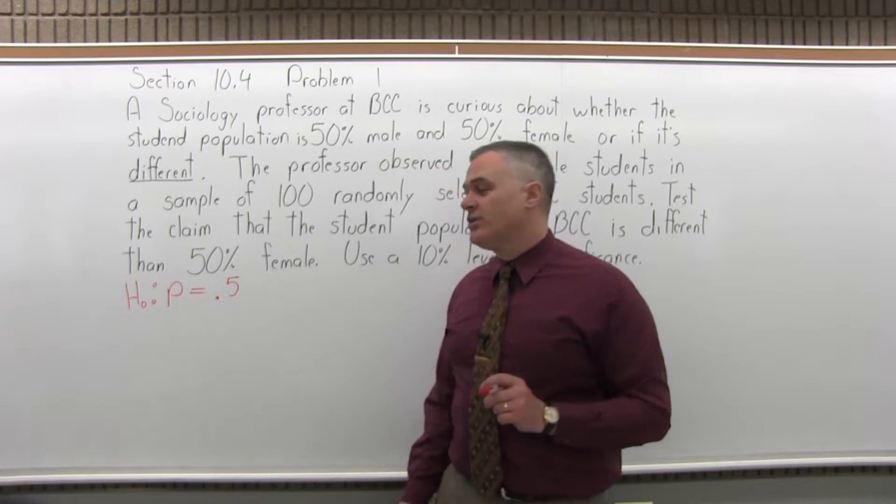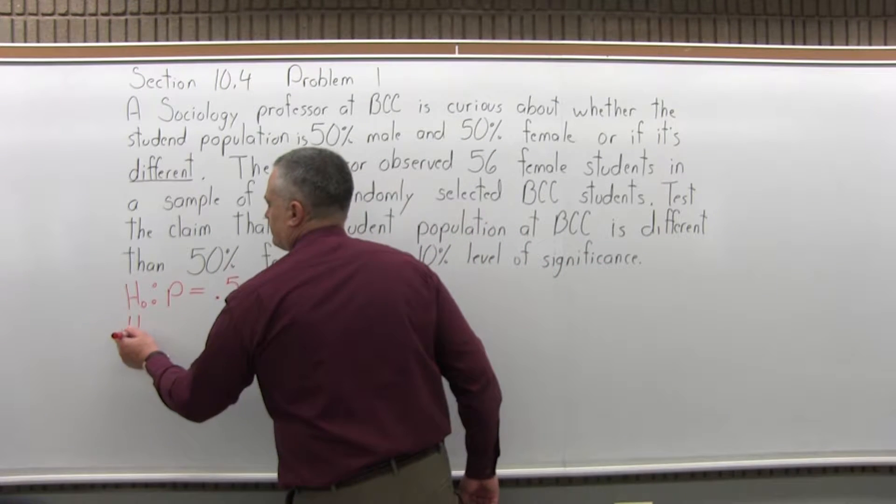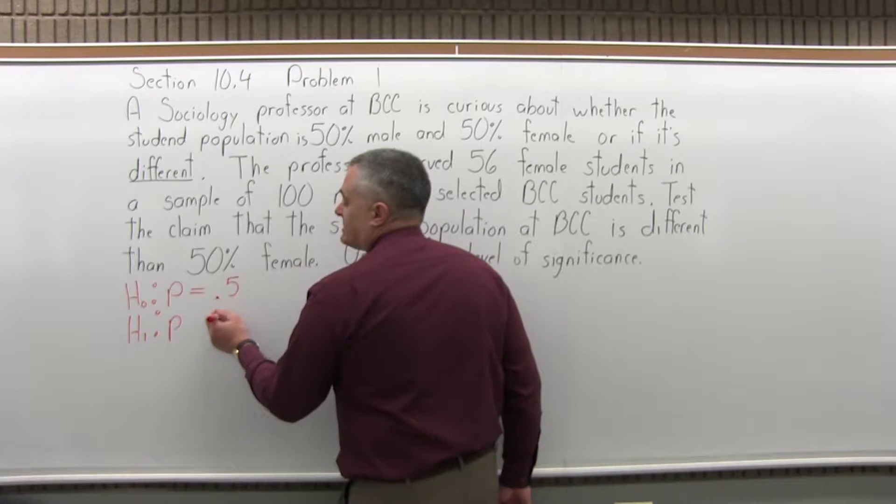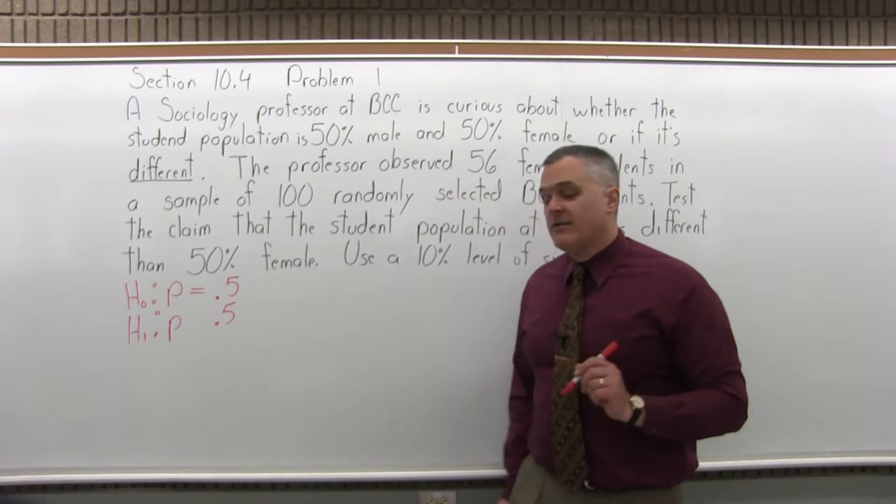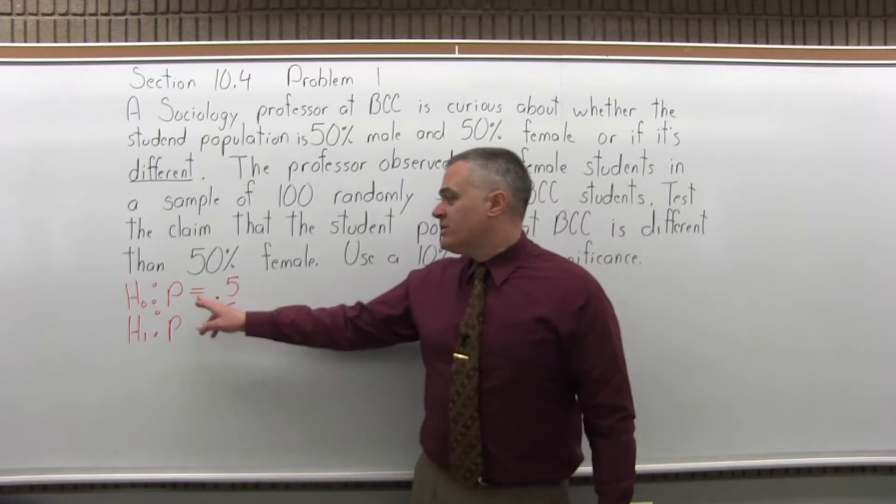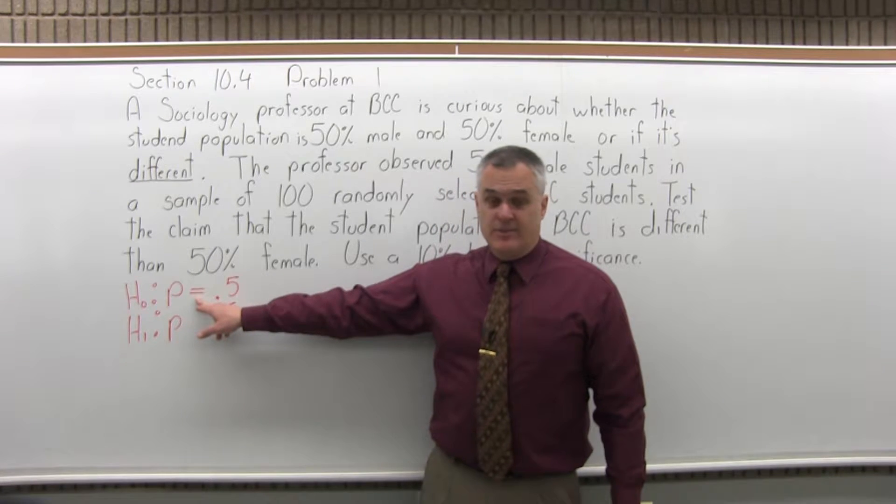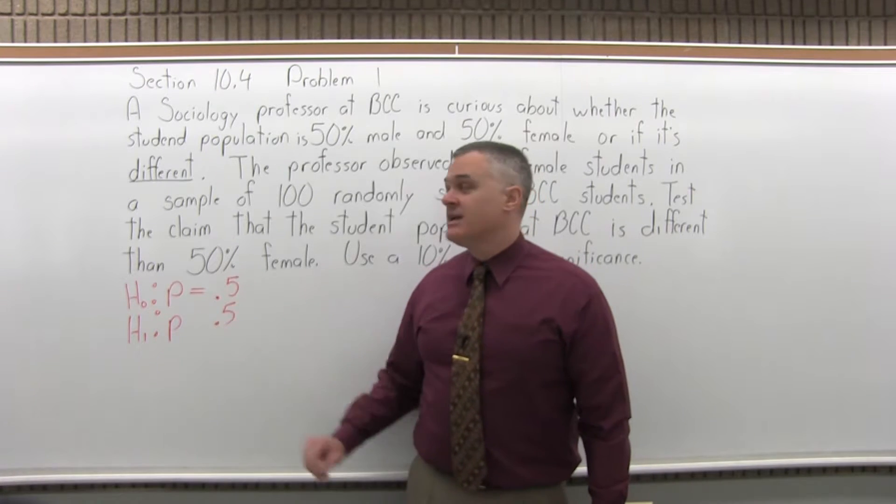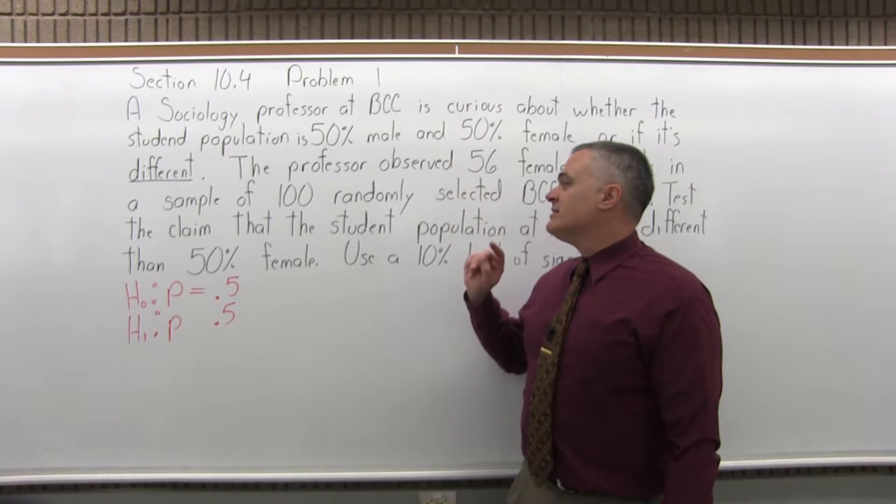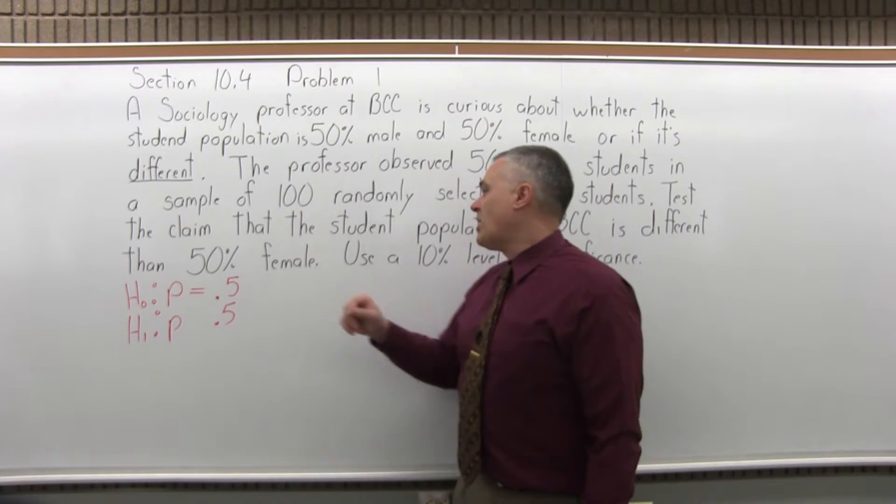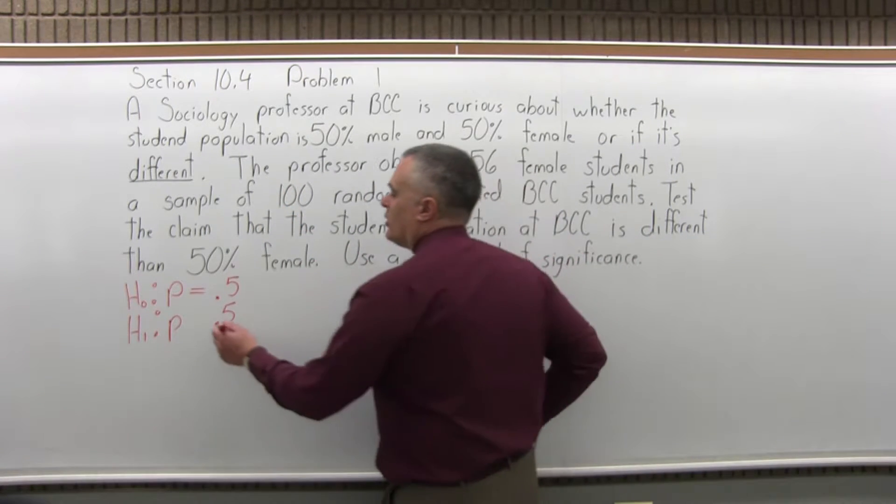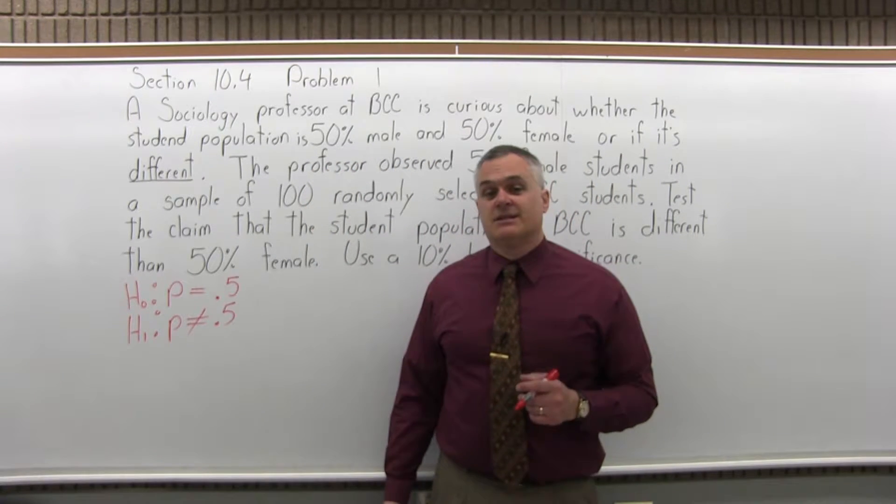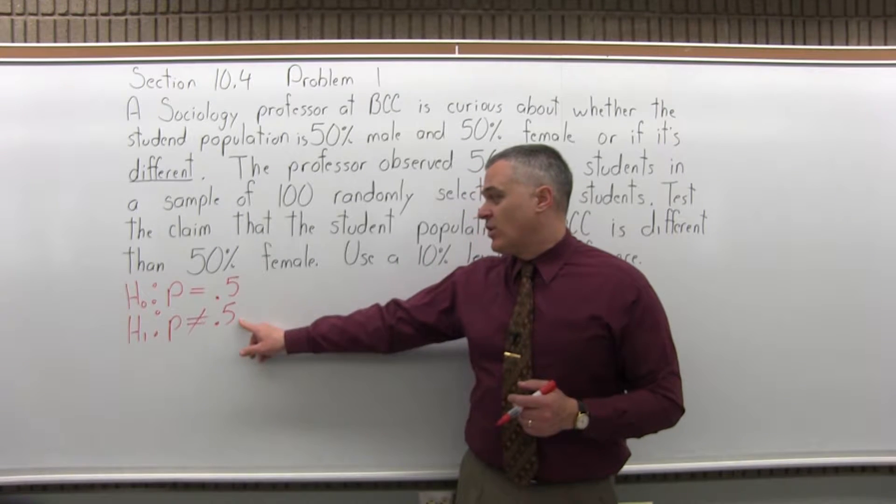Step two is write the alternate hypothesis. You're going to have capital H subscript of 1, P, the same number. So if it was 0.5 in the null, it will be 0.5 in the alternate. But you're going to have a different symbol other than equal. It will be either less than, greater than, or not equal to. In this case, it will be not equal to because we want to test that the population is different than 0.5, so not equal to.